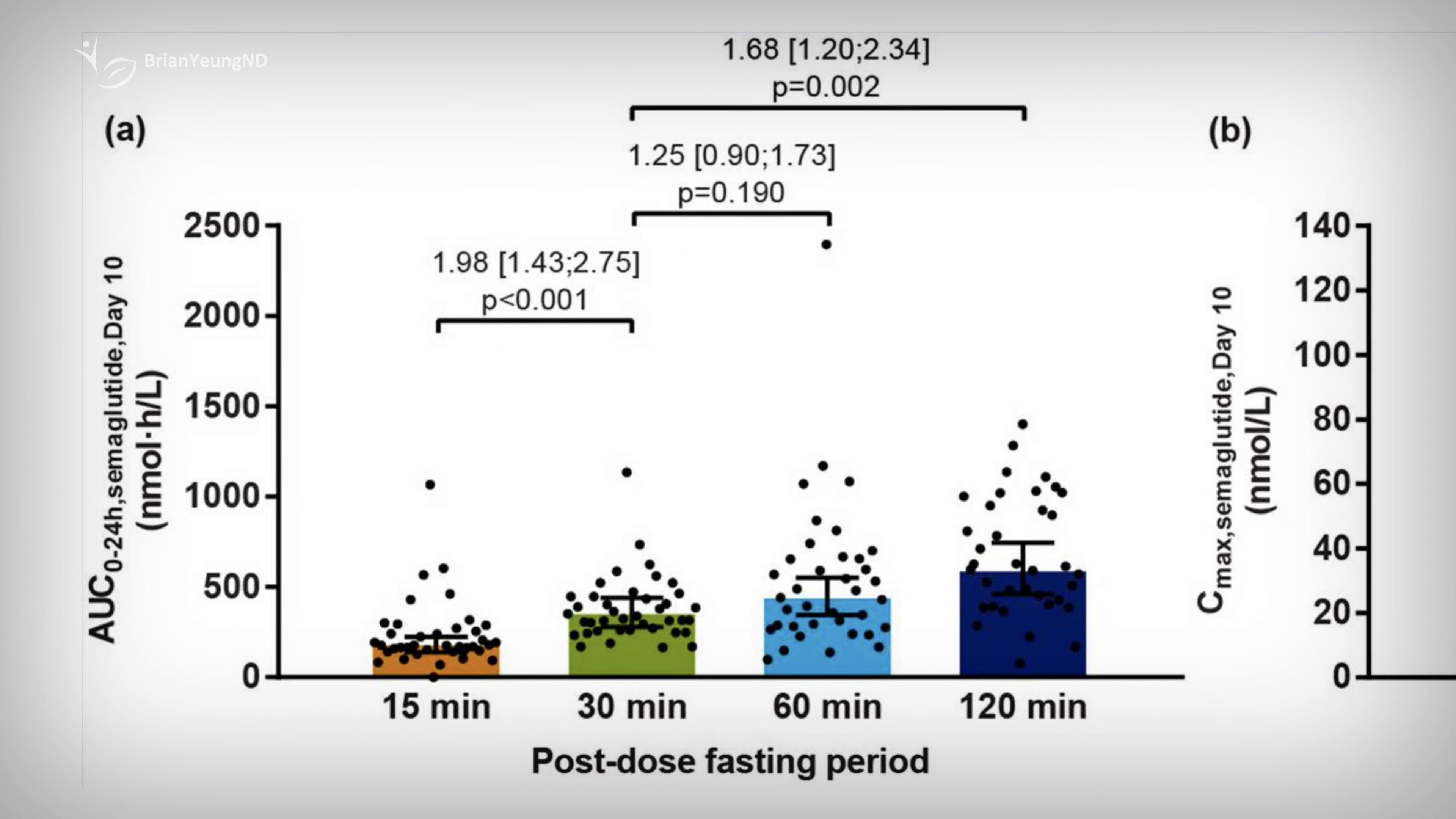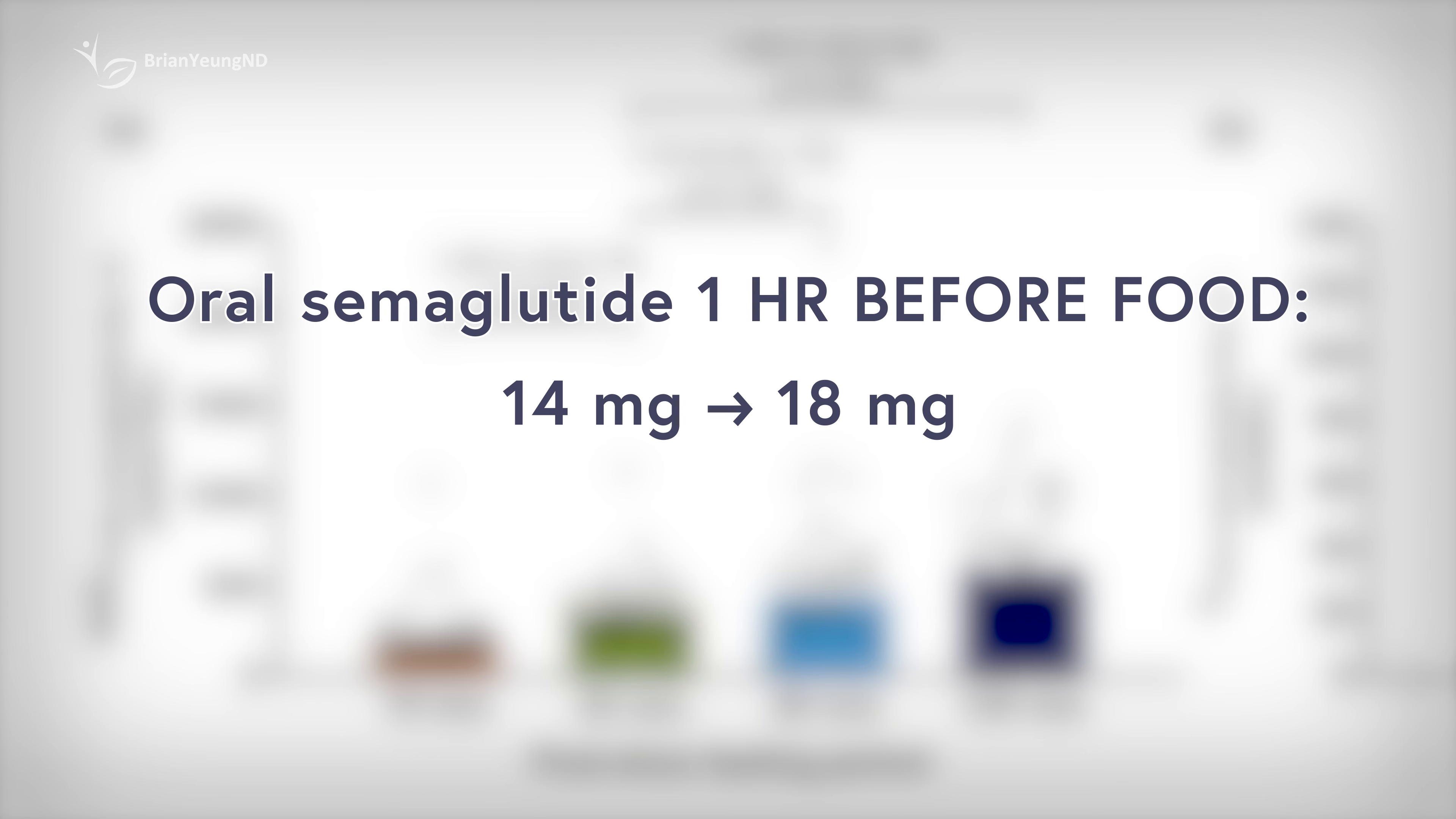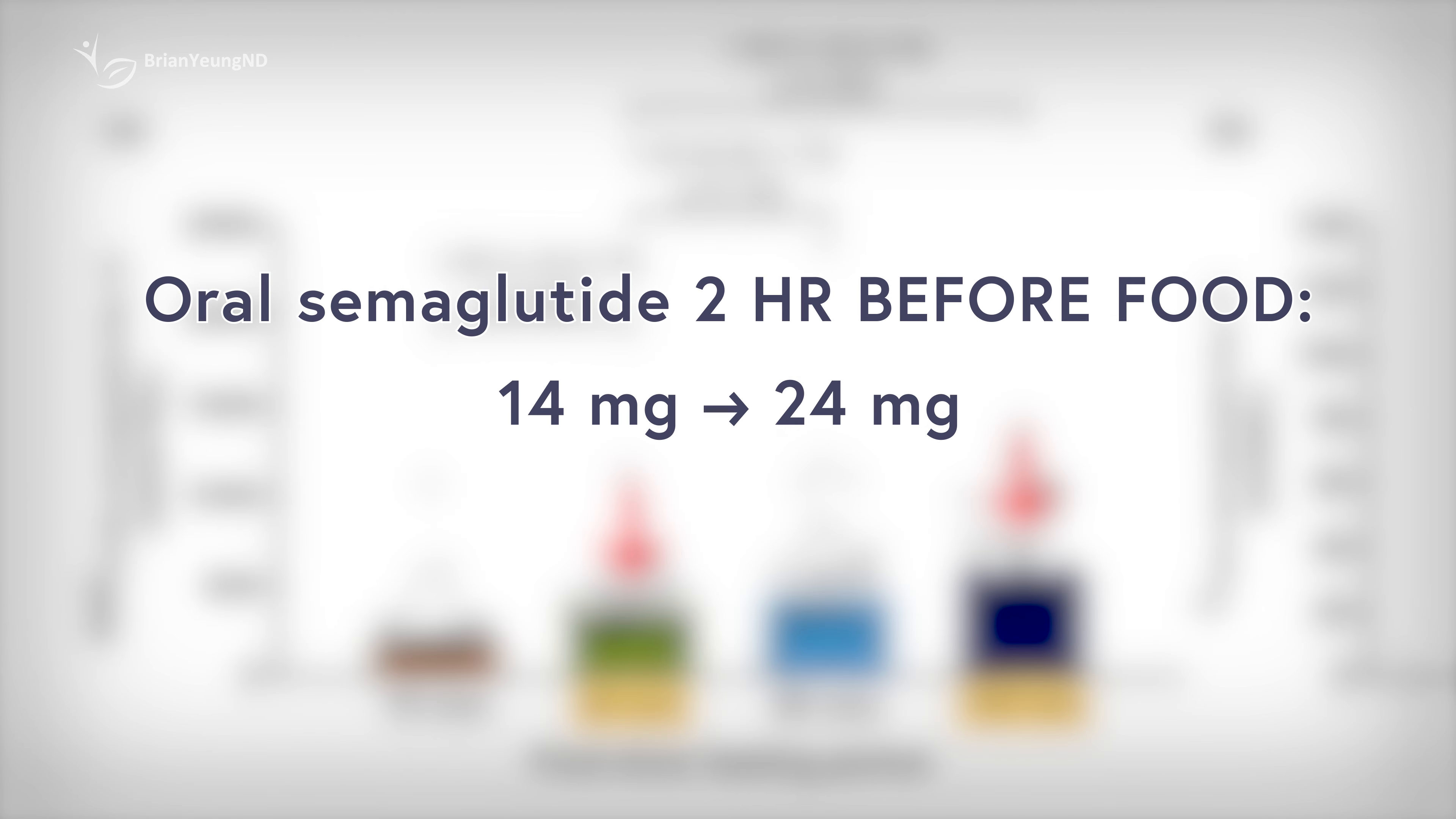Doing both, taking it with a full glass of water and eating only 15 minutes later would make absorption even worse. On the other hand, waiting one hour instead of the recommended 30 minutes before eating can increase absorption by up to 25%. This means that a 14 milligram dose would feel more like 18 milligrams and a 50 milligram dose more like 63 milligrams. Waiting two hours could increase the absorption by up to 70%. So a 14 milligram dose would feel more like 24 milligrams and a 50 milligram dose more like 85 milligrams. Now, waiting two hours before eating might seem tough, but it could be easier if you're also intermittent fasting and skipping breakfast.